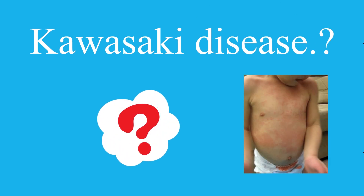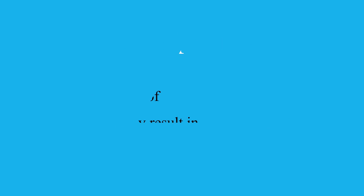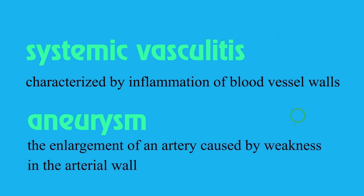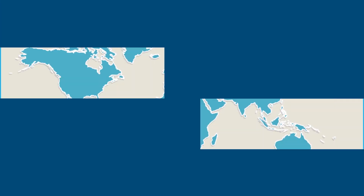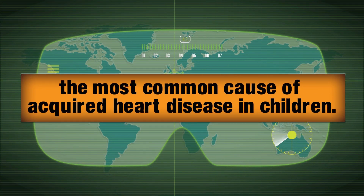Kawasaki disease is a systemic vasculitis of childhood that may result in aneurysms of the coronary arteries. The systemic vasculitis is characterized by inflammation of blood vessel walls, and an aneurysm is the enlargement of an artery caused by weakness in the arterial wall. In the developed world, Kawasaki disease is the most common cause of acquired heart disease in children.